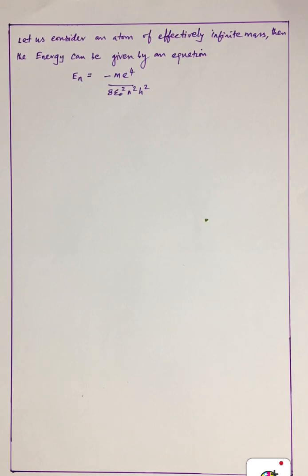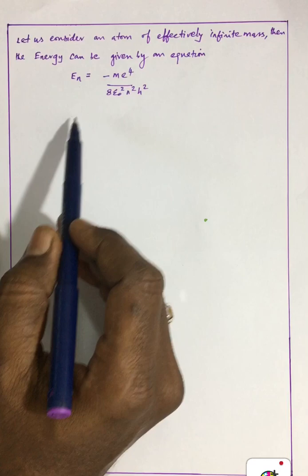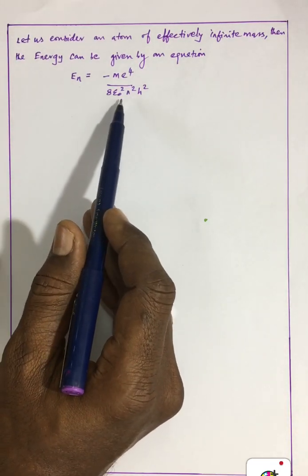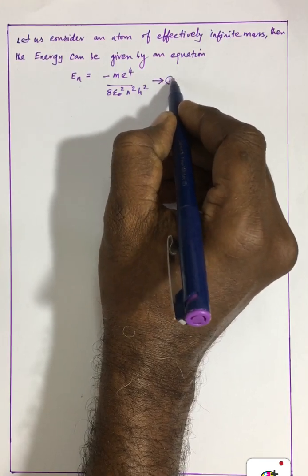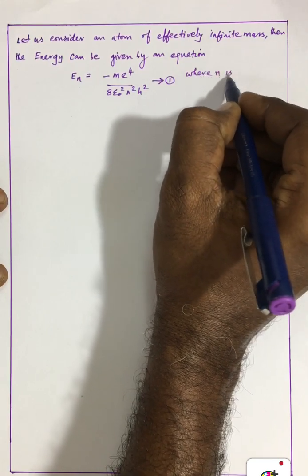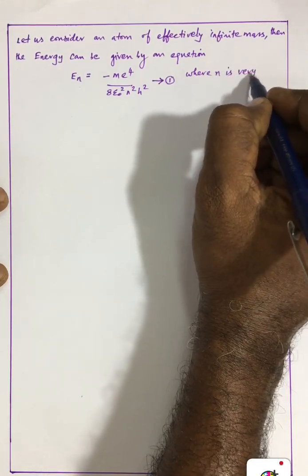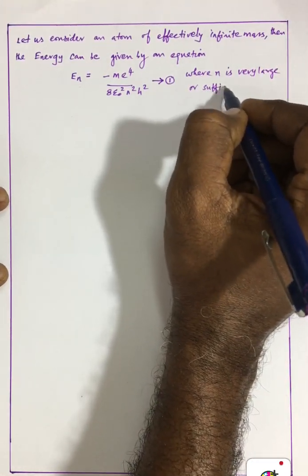We shall begin the proof by considering an atom of effectively infinite mass. Then the energy can be given by the equation: E_n equals minus m·e⁴ divided by 8·ε₀²·n²·h², where n is very large or sufficiently great. This is equation number one.